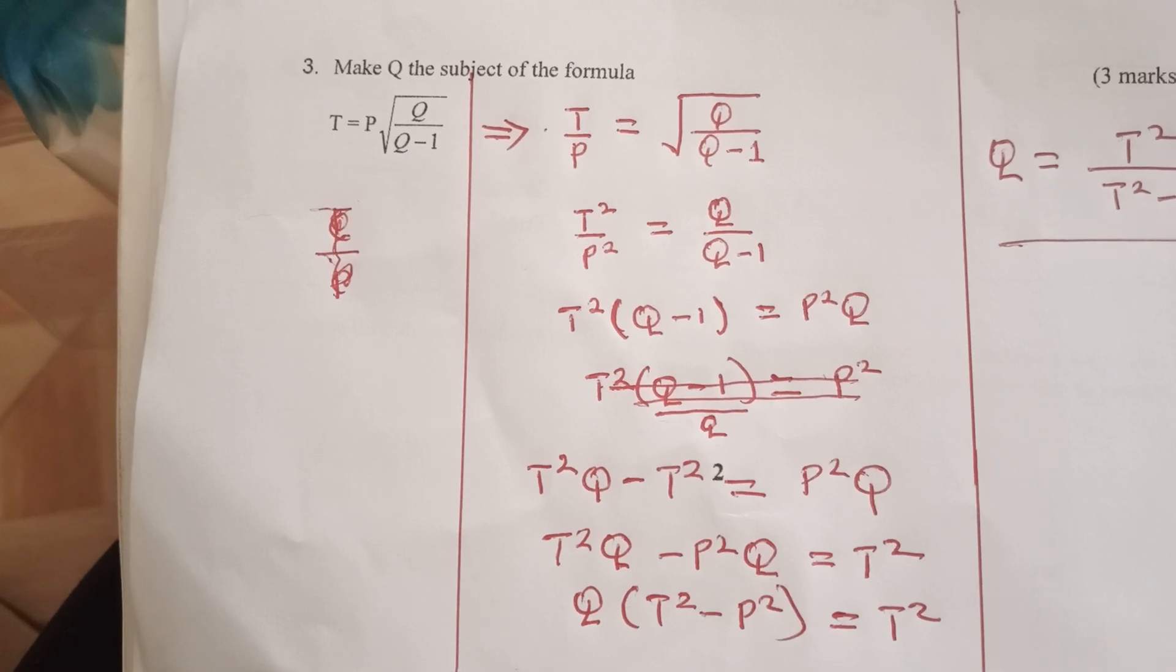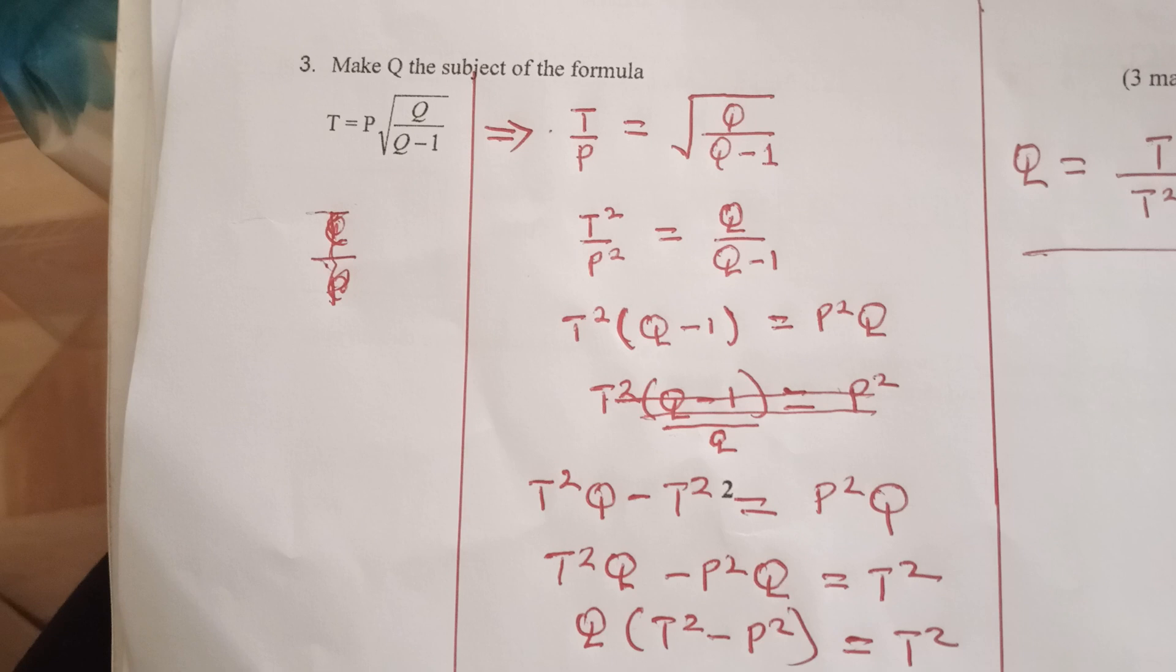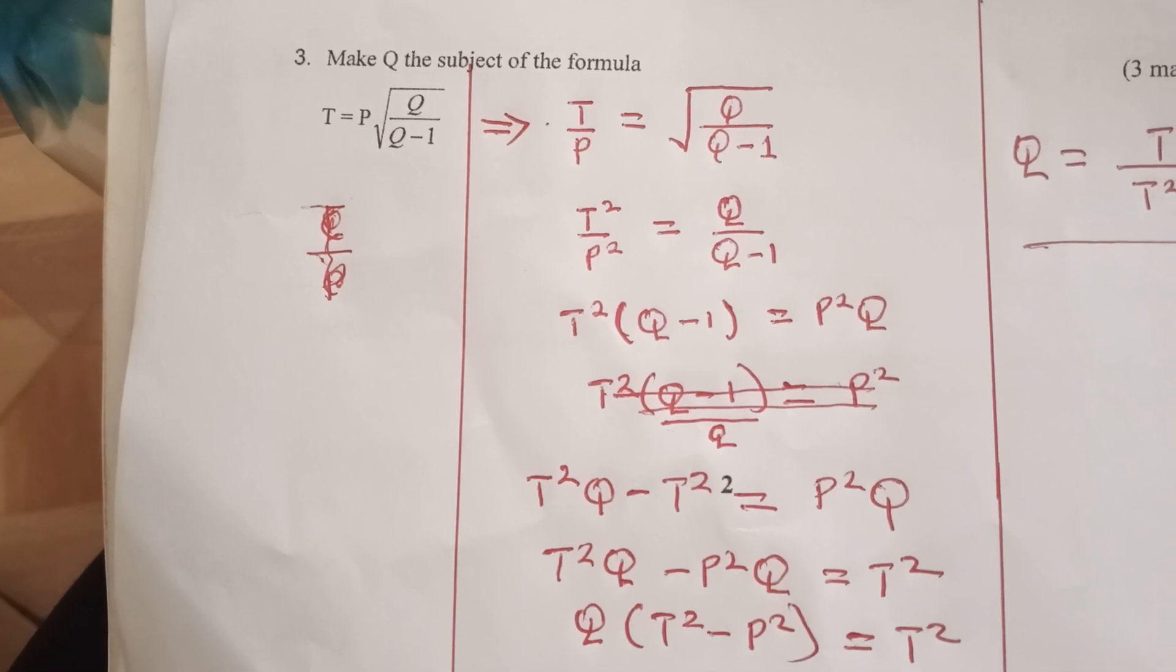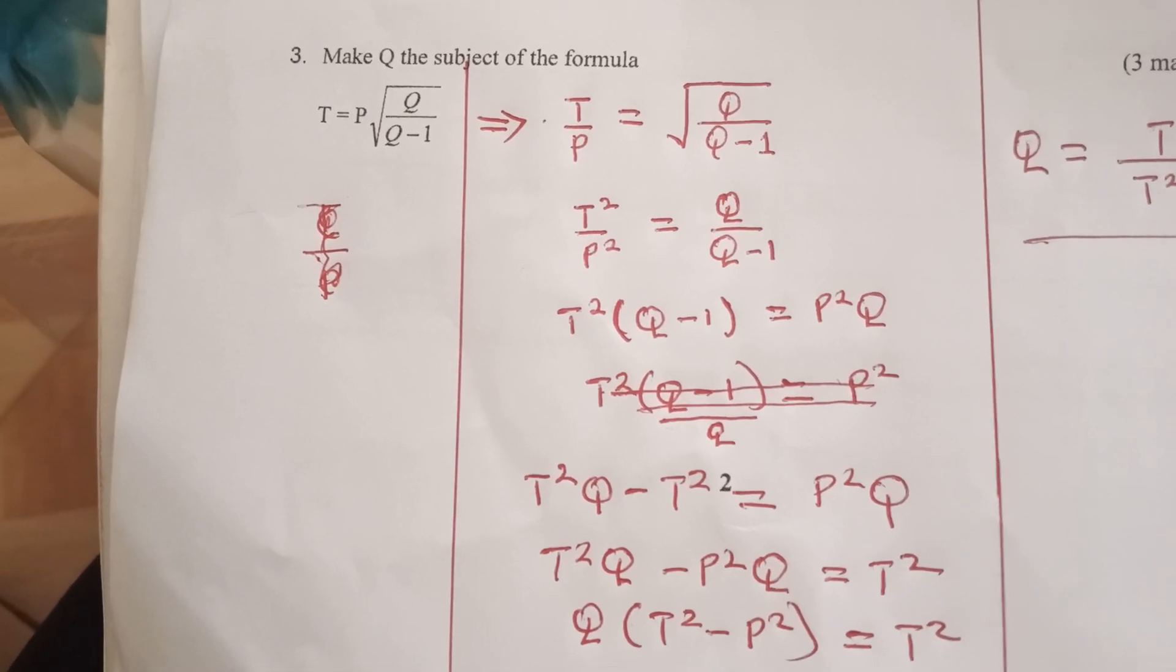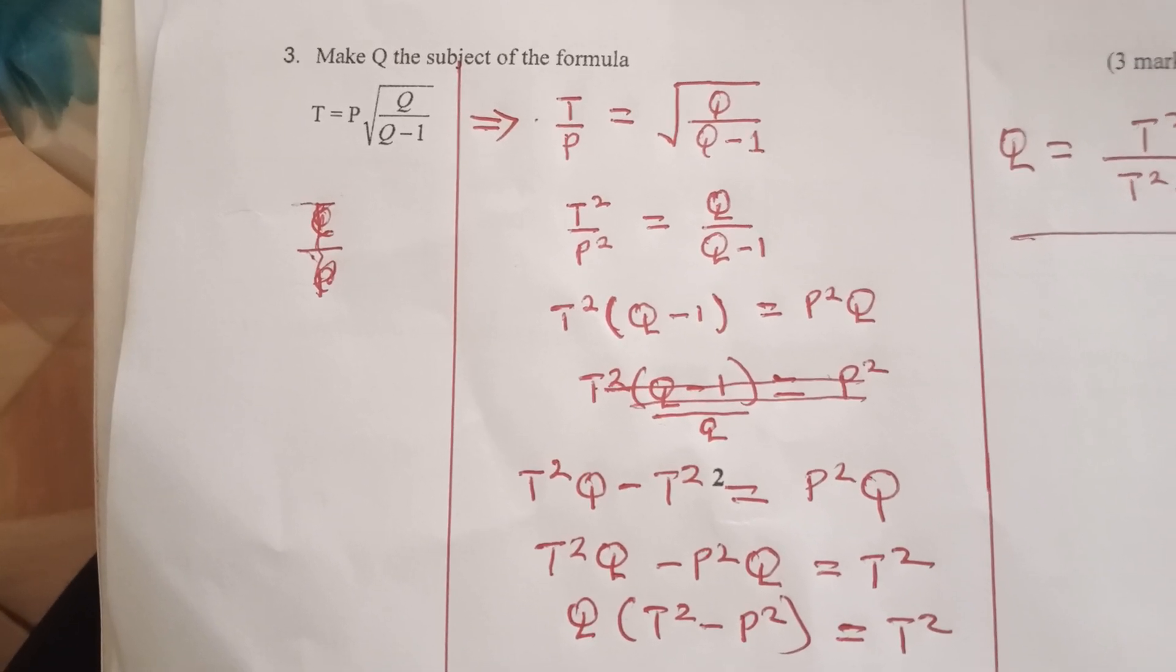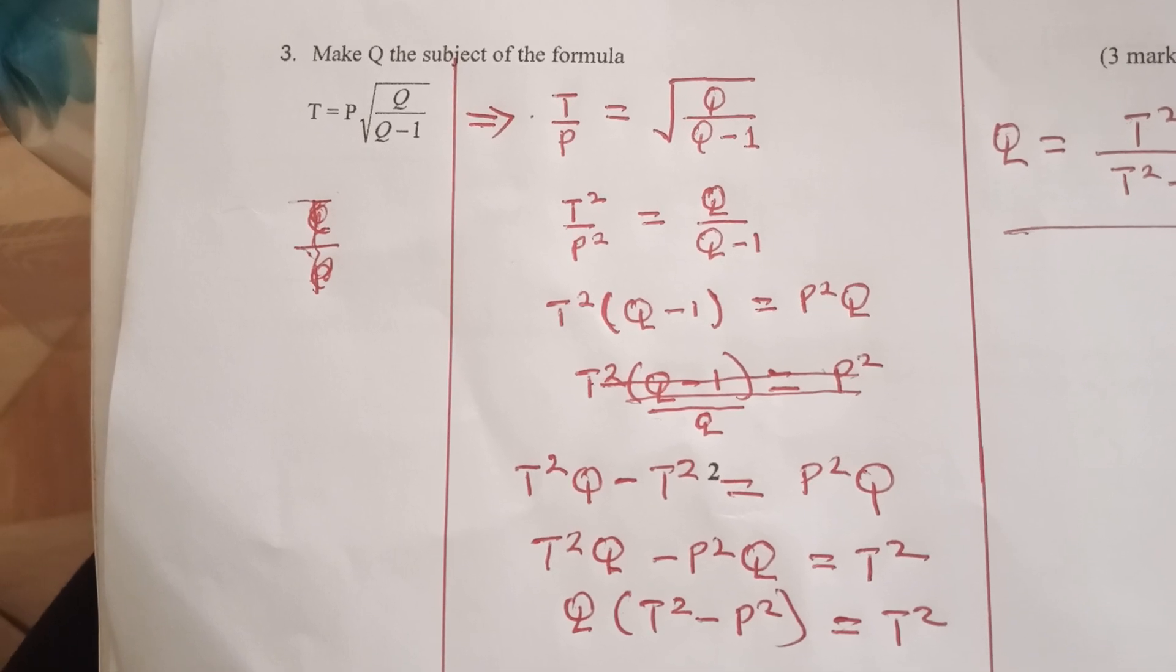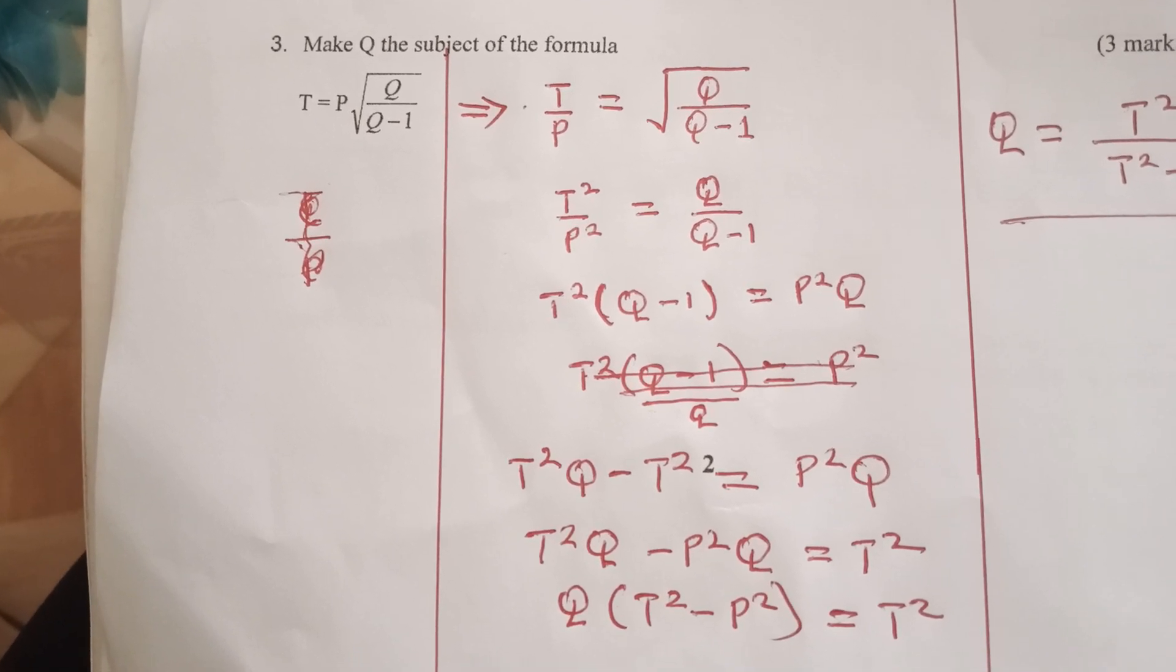Now, because there is a square root on one side, we are going to square. First of all, we are going to divide both sides by P, so that we have T over P equals to root Q over Q minus 1.